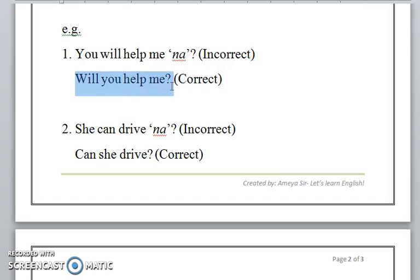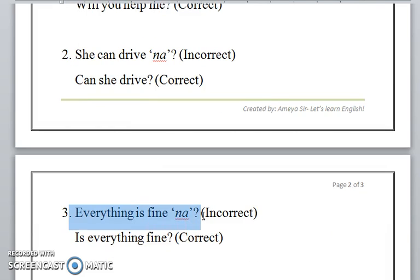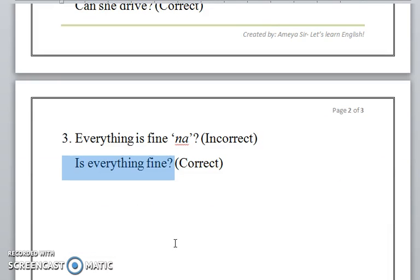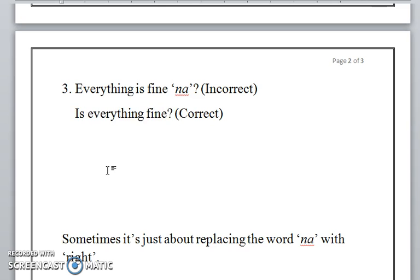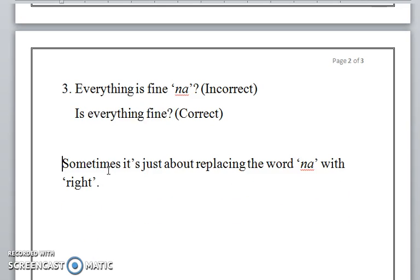'You will help me na' - not the right way. 'Will you help me?' - correct. 'She can drive na' - incorrect. 'Can she drive?' - correct. 'Everything is fine na' - incorrect. 'Is everything fine?' - correct.